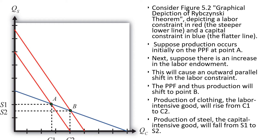In this production possibility frontier, initially the production happens at point A. If there is an increase in the labor endowment, there is an outward parallel shift of the labor constraint. As a result, the production possibility frontier shifts from point A to point B. The production of clothing, represented on the x-axis — clothing being a labor-intensive good — rises from C1 to C2, and the production of steel, represented on the y-axis as a capital-intensive good, falls from S1 to S2.